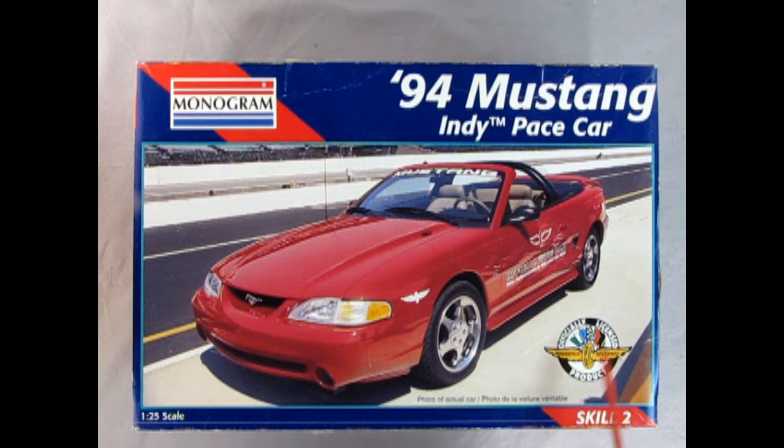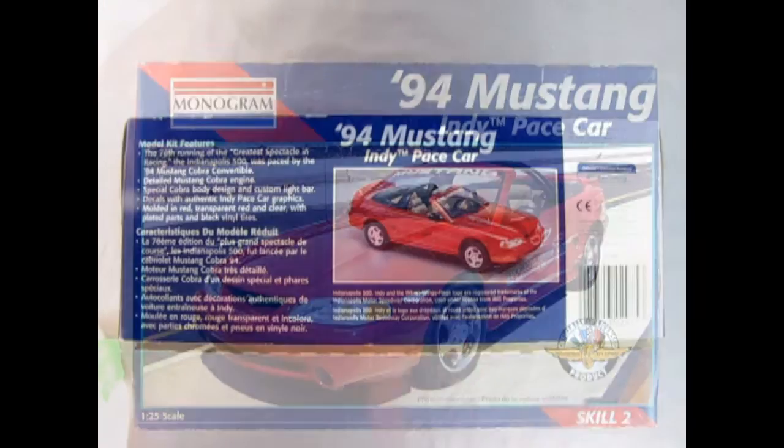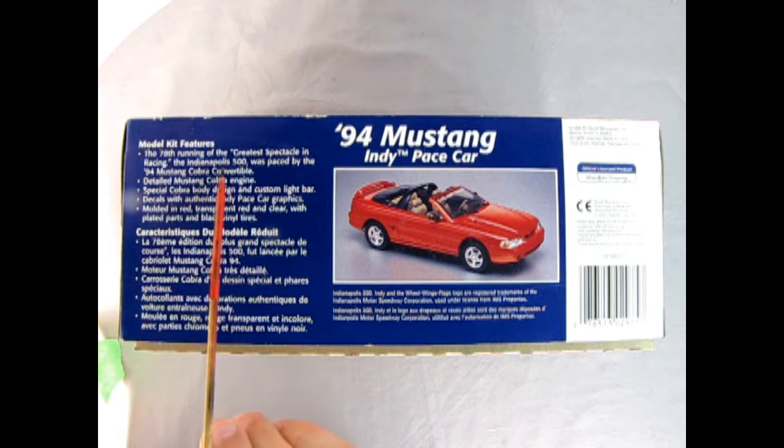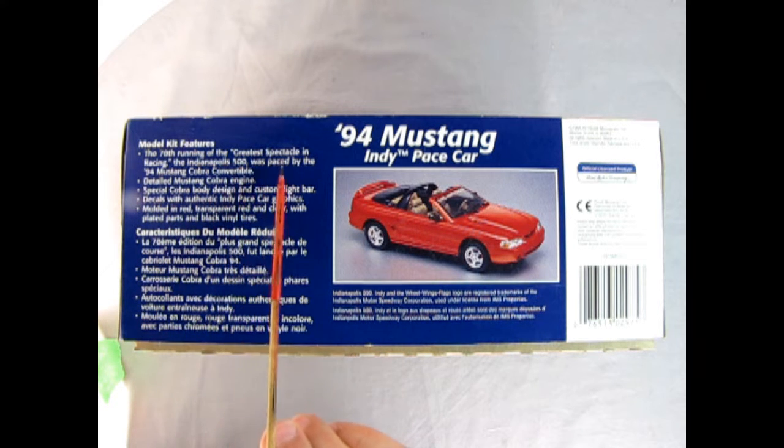This is officially a licensed product from Indianapolis Motor Speedway for skill level 2 and here we have a photo of the actual car. On this side of the box we get a wonderful front top three-quarter view and we can see the model kit features. The 78th running of the greatest spectacle in racing, the Indianapolis 500 was paced by the 94 Mustang Cobra convertible.